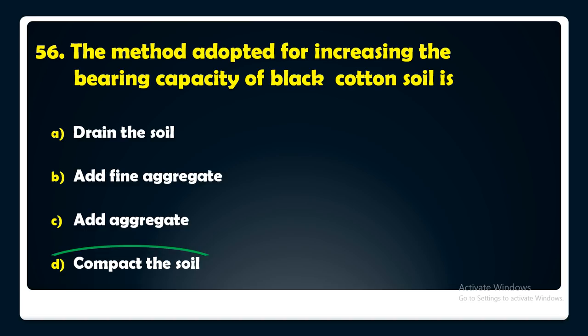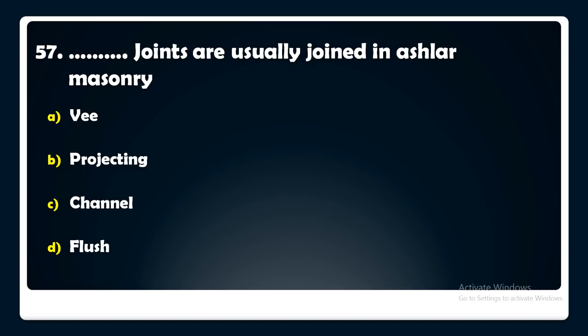Which joints are usually used in Ashlar masonry — V joints, projecting joints, channel joints, or flush joints? The answer is: flush joints are usually used in Ashlar masonry.